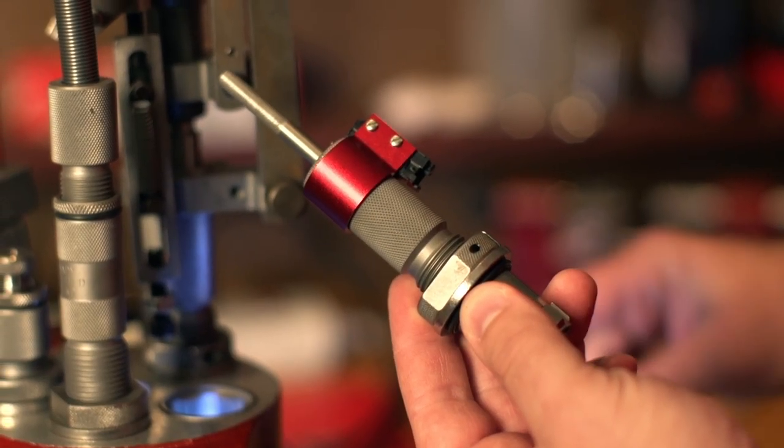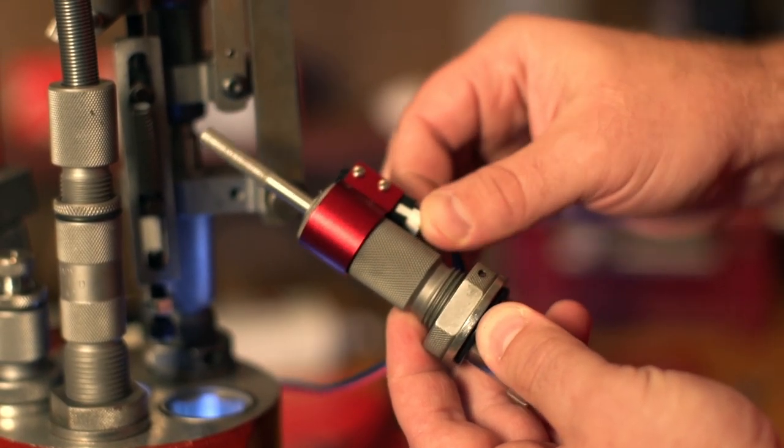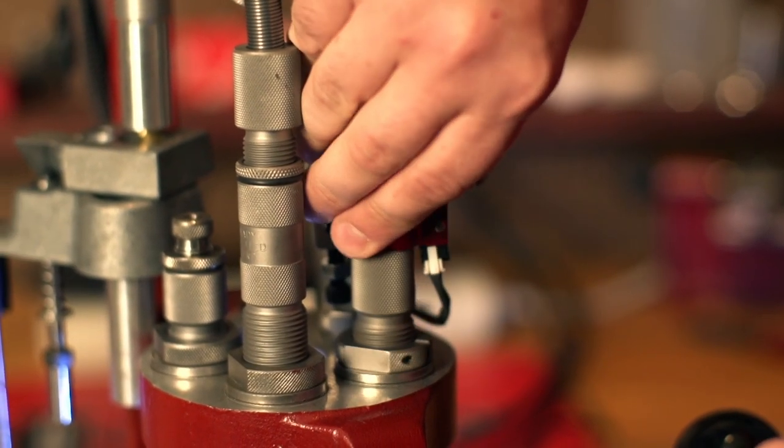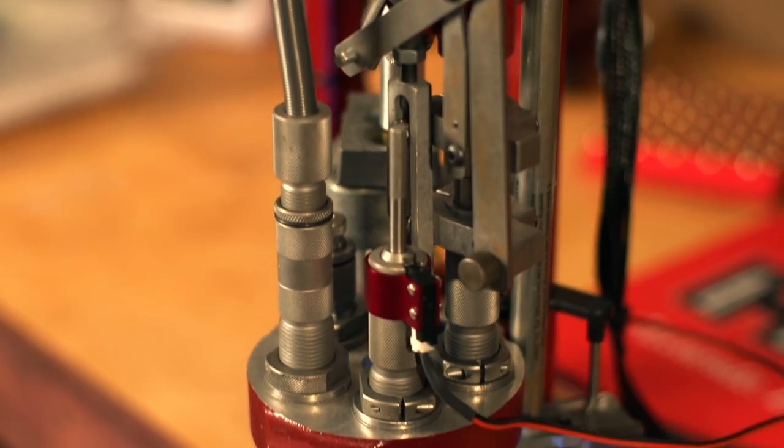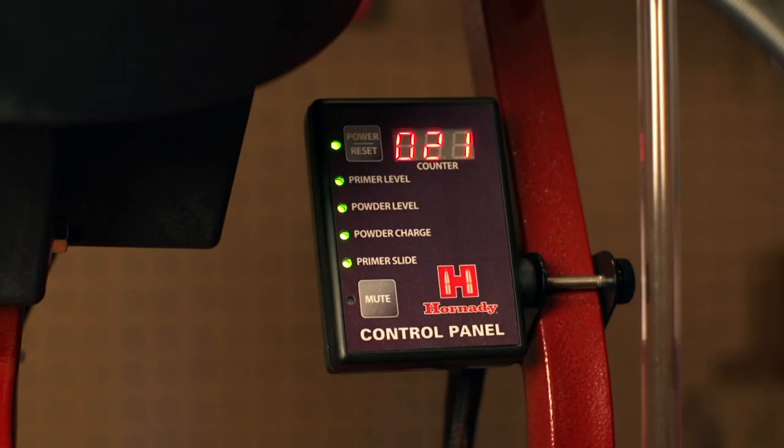One of the key features is the Powder Safeguard Die. Designed to detect the physical presence of powder in a cartridge case, the Powder Safeguard Die checks straight-walled cartridge cases from 9mm to .45 caliber for a no-charge or a double-charge.